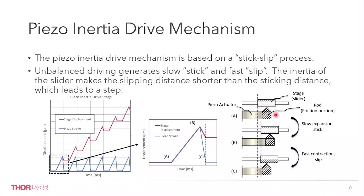The rod can also push or pull the slider by friction force, as shown in the enlarged displacement-versus-time curves. From phase A to phase B, the piezo actuator is slowly charged, generating a slow expansion stroke.